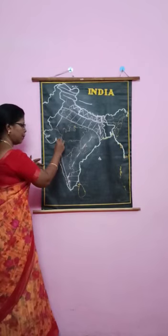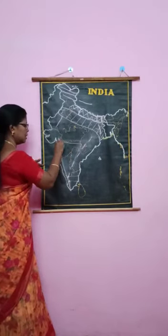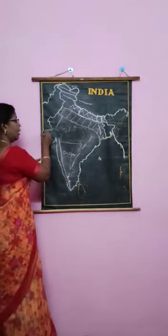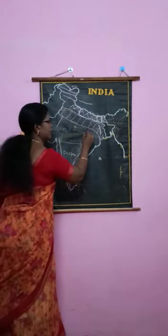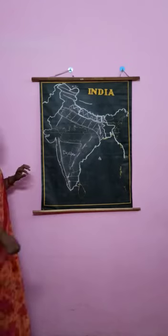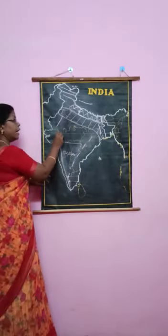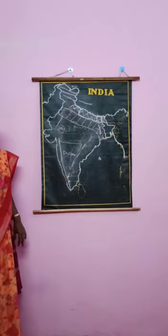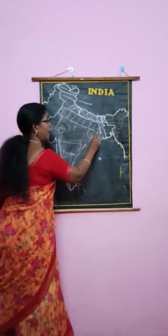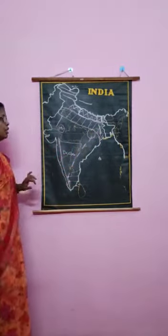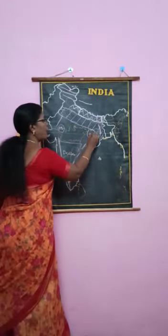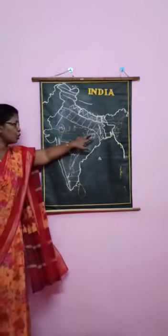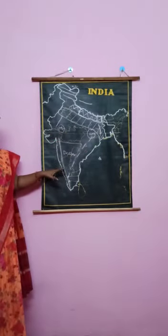Next we will see the plateaus. Main plateau is the Deccan plateau. And you know the latitude which dissects India is the Tropic of Cancer. North of the Tropic of Cancer you can draw the Malwa plateau. Connected to this plateau, joining this area, it is called Chotanagpur plateau. So Malwa plateau, Chotanagpur plateau, and Deccan plateau.